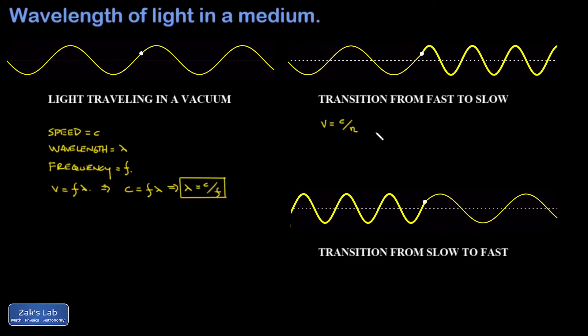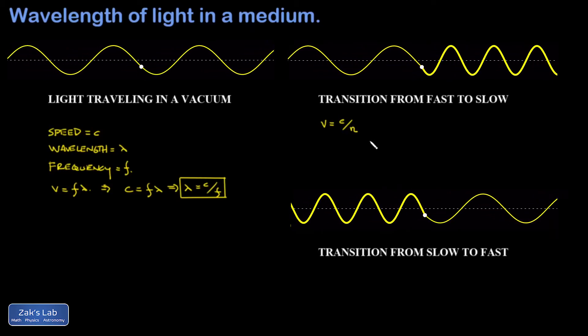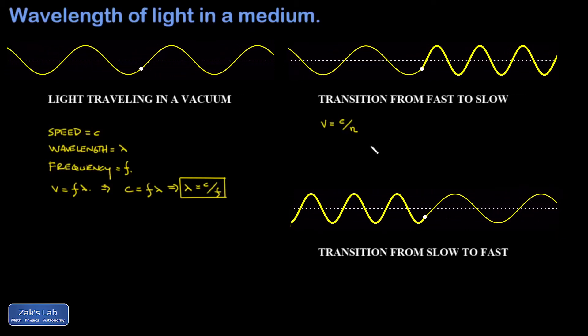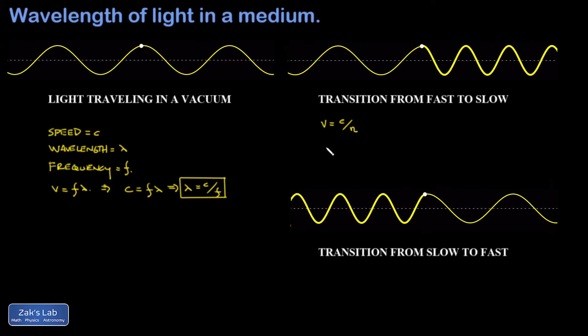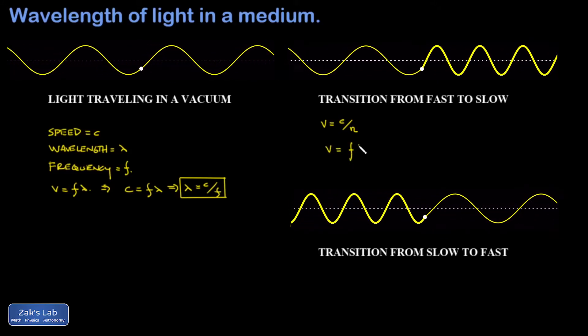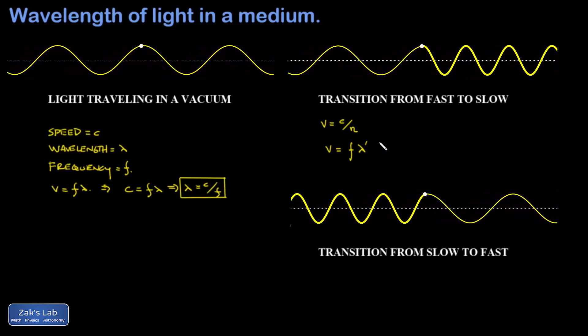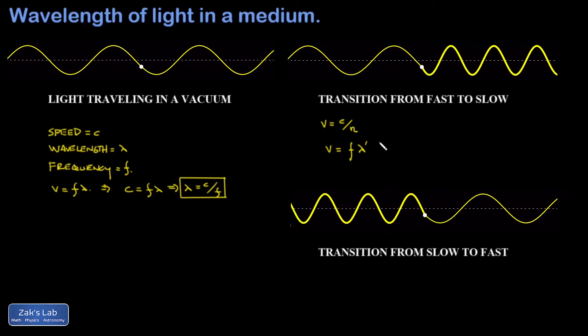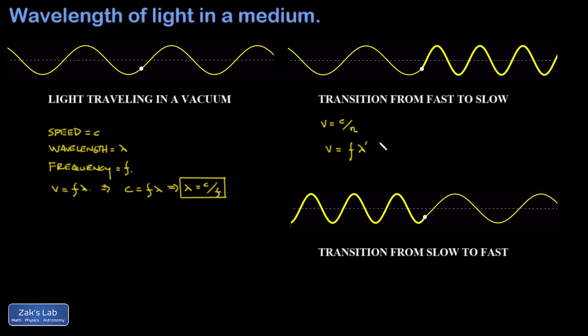All right. So everywhere in the wave, the frequency is the same. But what changes here? I can see in the picture it appears to be the wavelength that changes. So if you have a smaller speed and the frequency stays the same, looking at V equals F lambda, it must be lambda that got smaller to explain that decrease in the velocity.